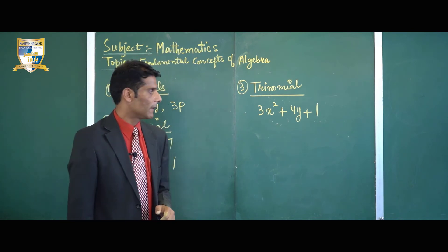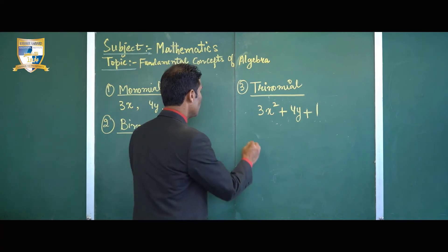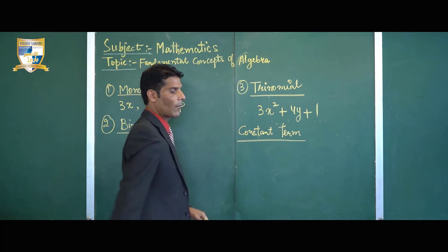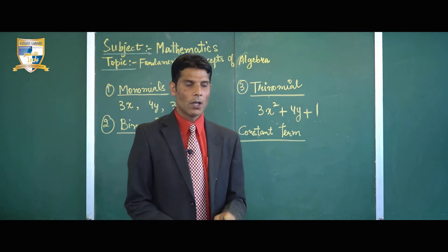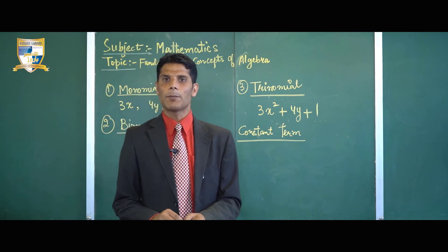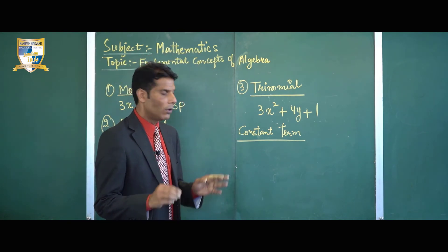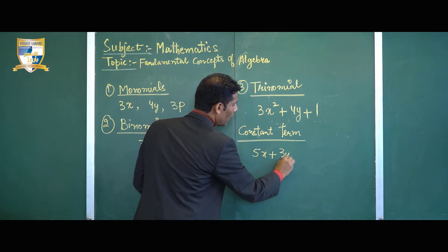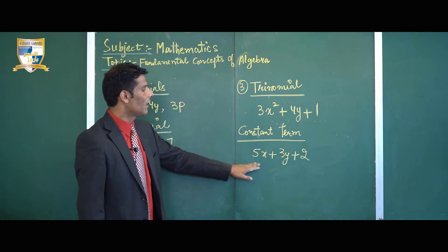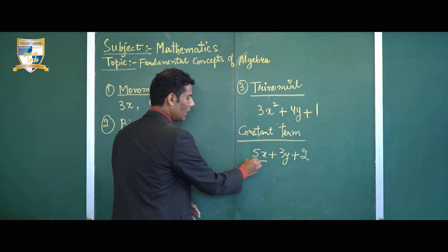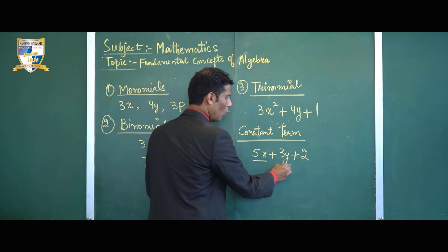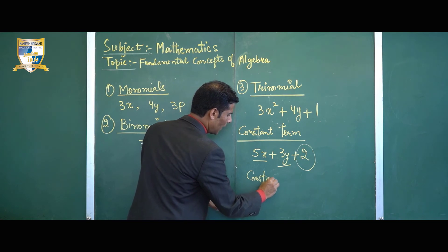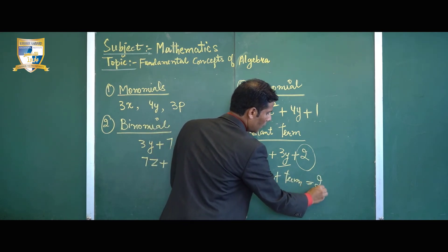After that, the next concept is the constant term. Constant terms in an algebraic expression are those which do not contain any variable. For example, in 5x plus 3y plus 2: 5 is a constant and x is a variable, 3 is a constant and y is a variable, but 2 is just a constant. So the constant term in this algebraic expression is 2.